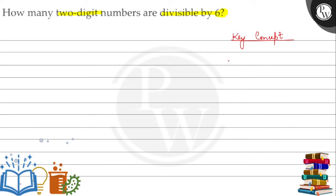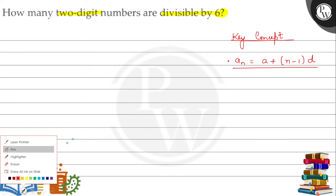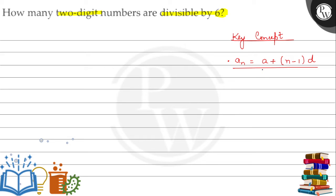We know that for the nth term of AP, an equals a plus (n-1)d. This is the formula for the nth term of an AP. From this formula, we can calculate the first term, the last term, the number of terms, and even the common difference.